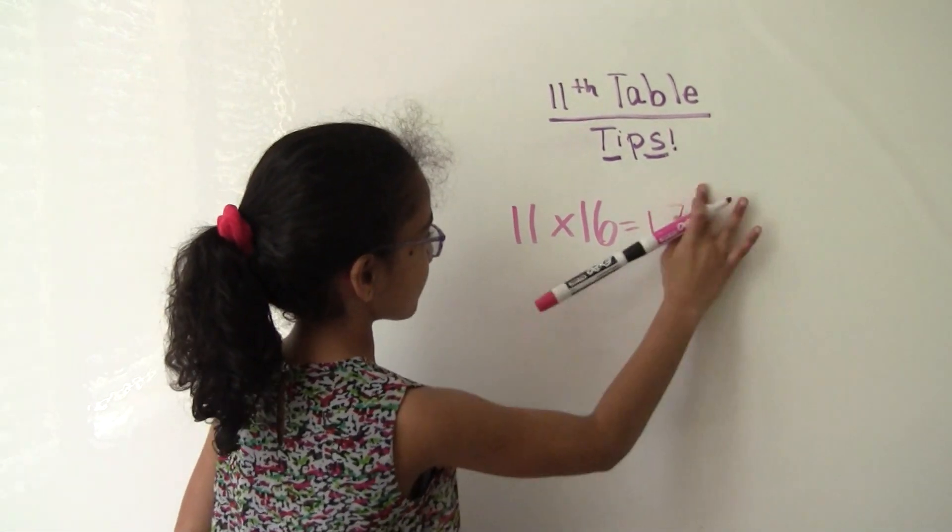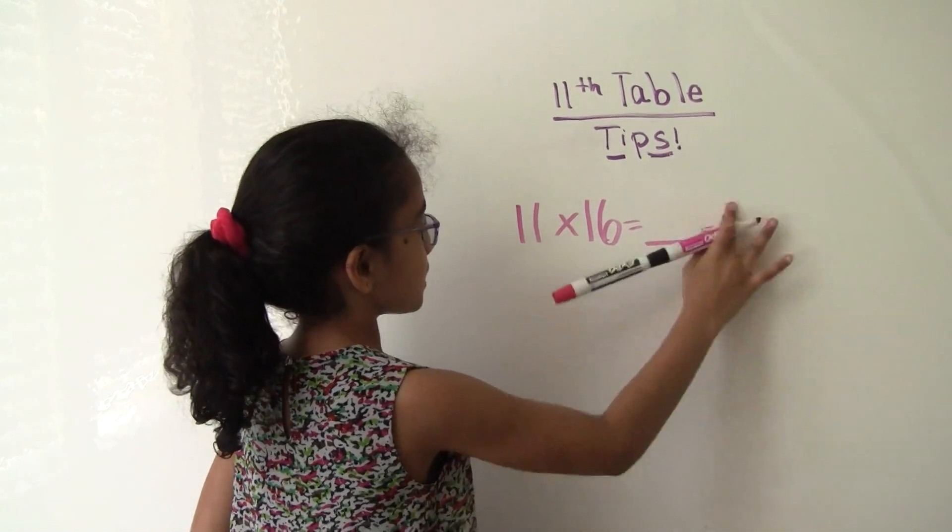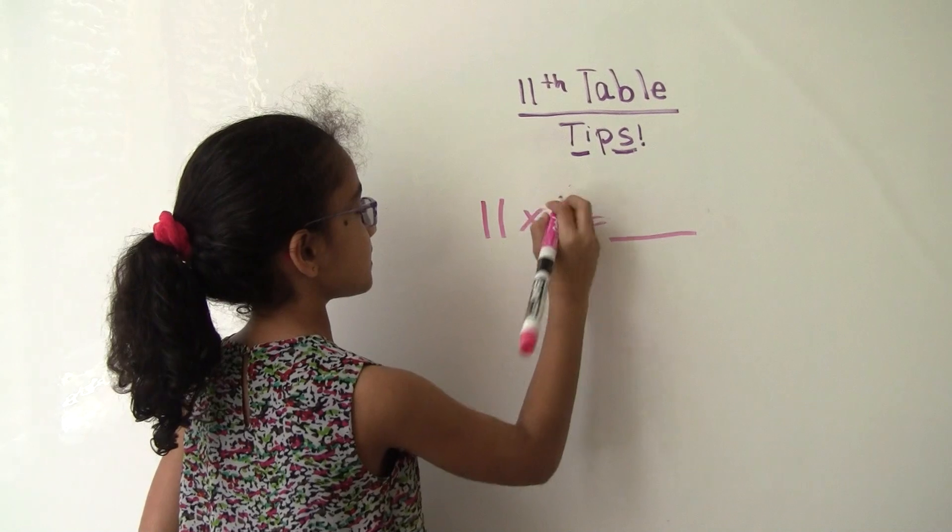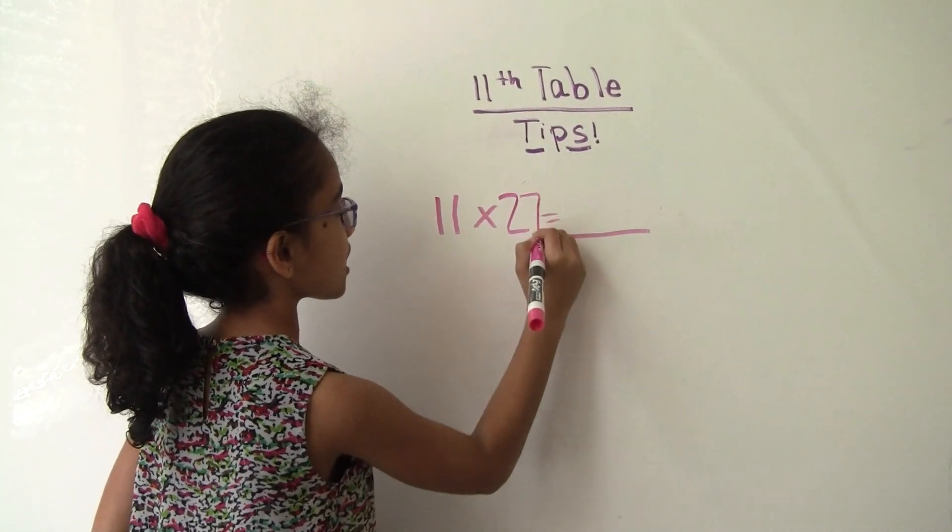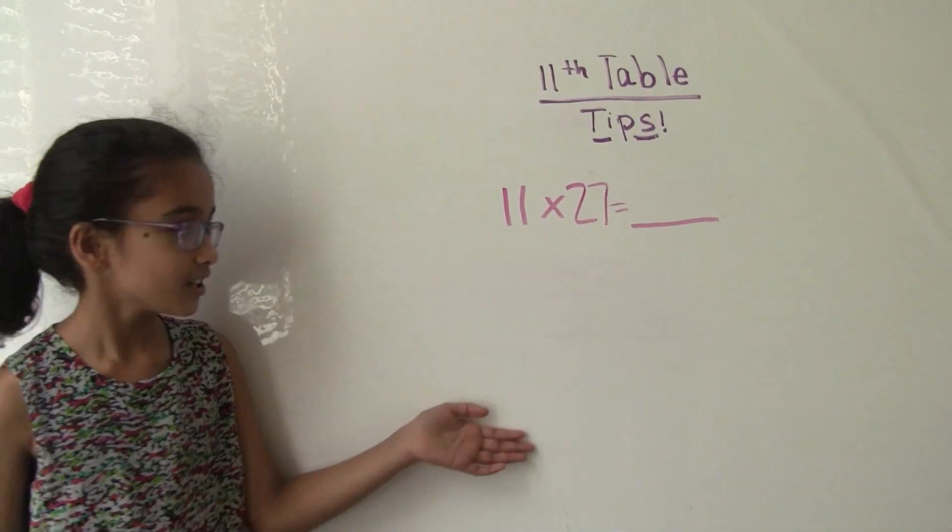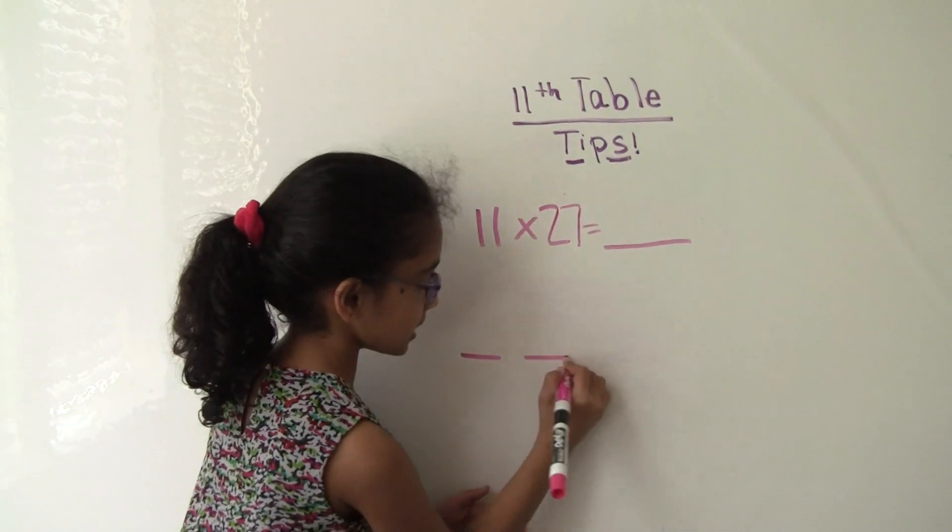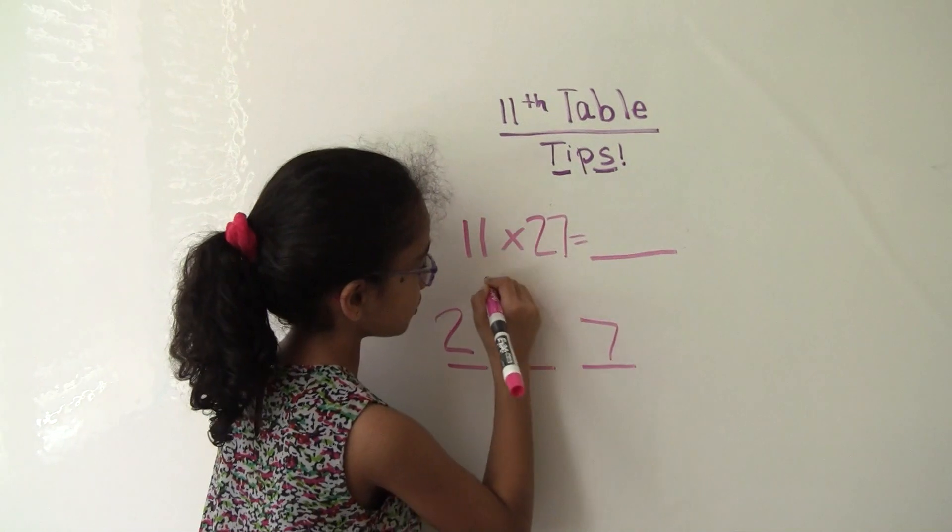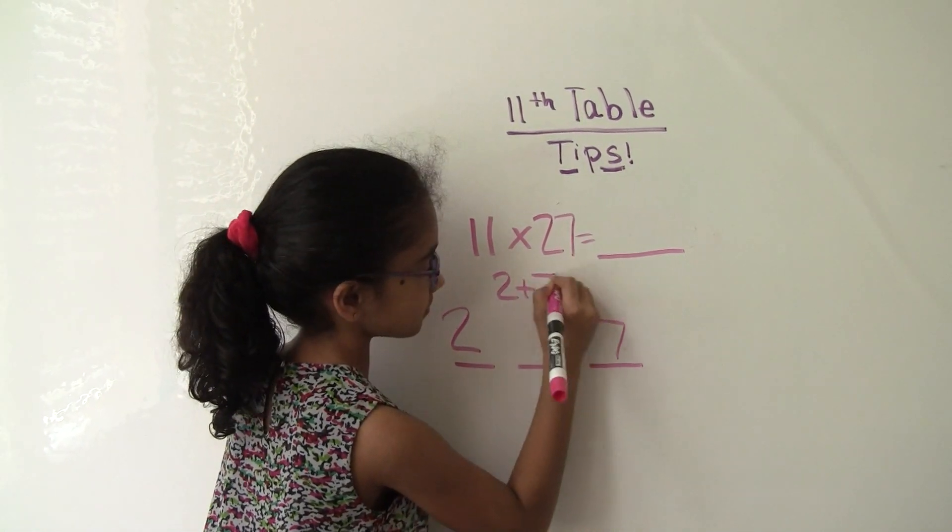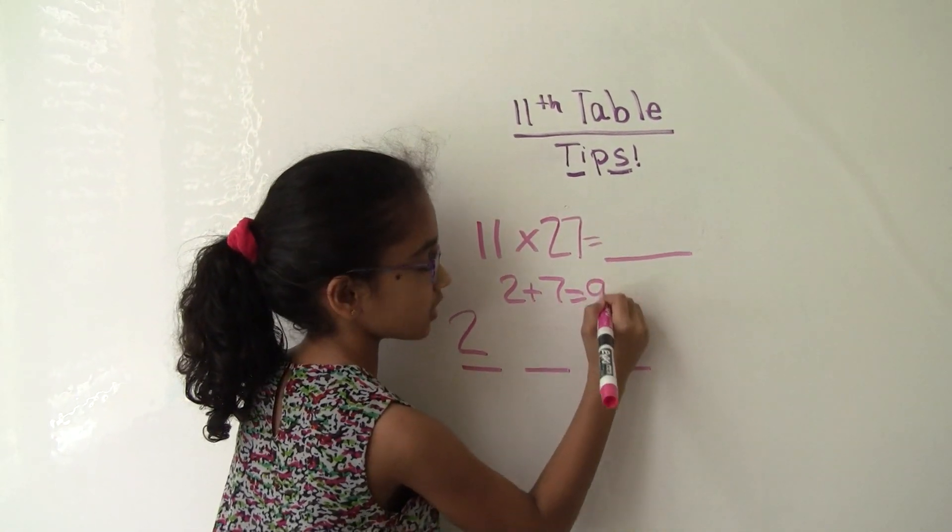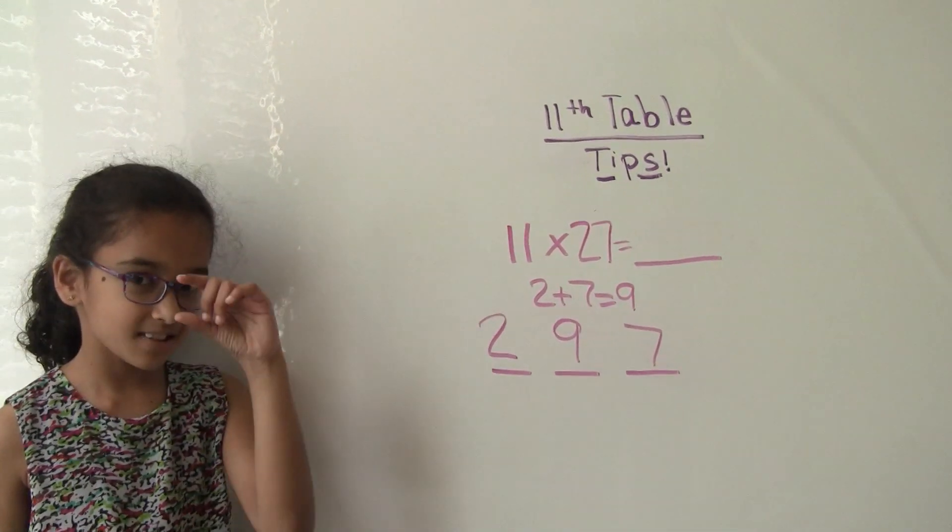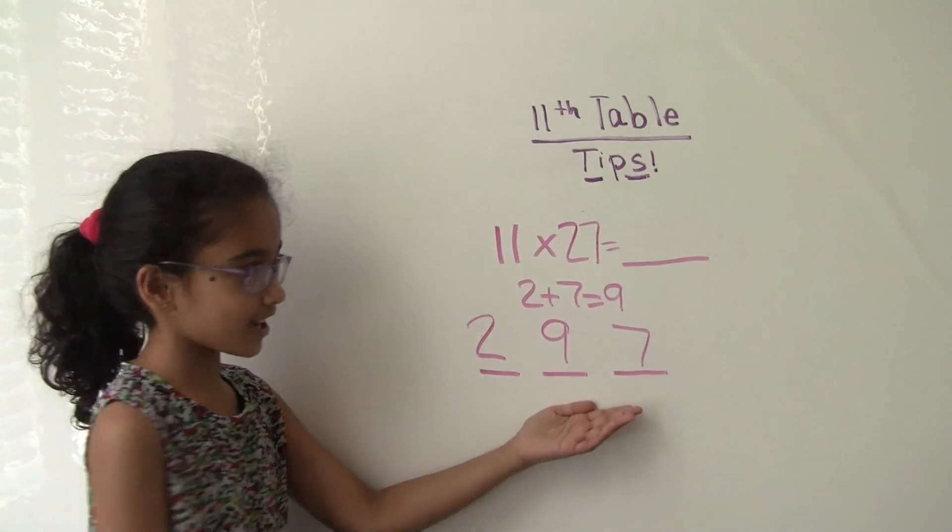Let's try 11 times 27. We're getting into higher numbers here. So again, write your 3, 2, and 7, and then 2 plus 7 equals 9. See how we did that in these many seconds? It ends up 297.